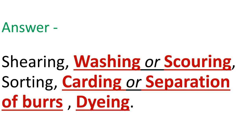As we are already aware of all these steps involved in the production of wool, we can easily fill in the blanks. Starting with shearing, the next step is washing or scouring, then sorting, after that carding or separation of burrs, and finally dyeing.